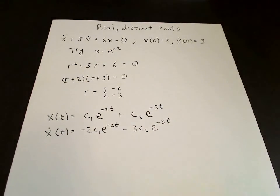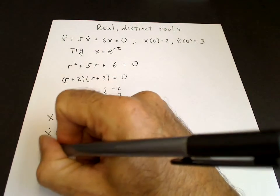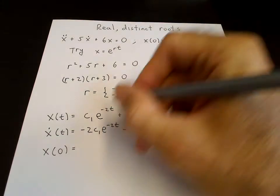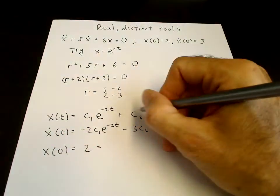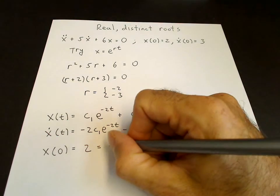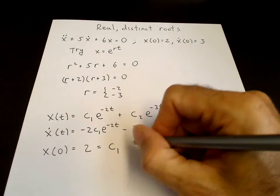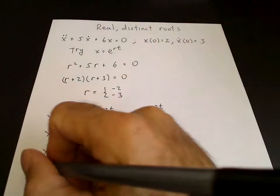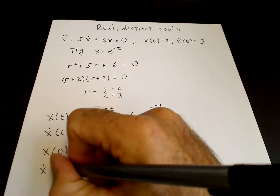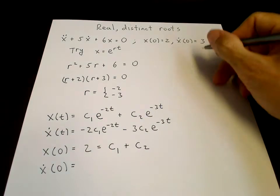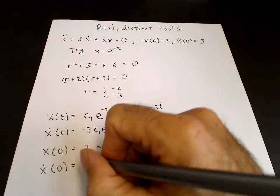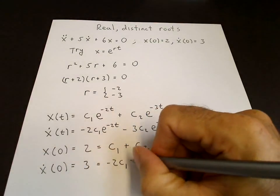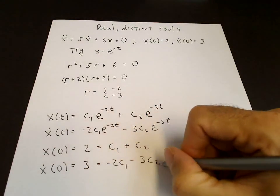Then we can apply the initial conditions. So x(0) is supposed to equal 2, and that's equal to c₁ times e^0, which is c₁, plus c₂ times e^0, which is c₂. Similarly, ẋ(0) is supposed to equal 3, and that's equal to -2c₁ - 3c₂.